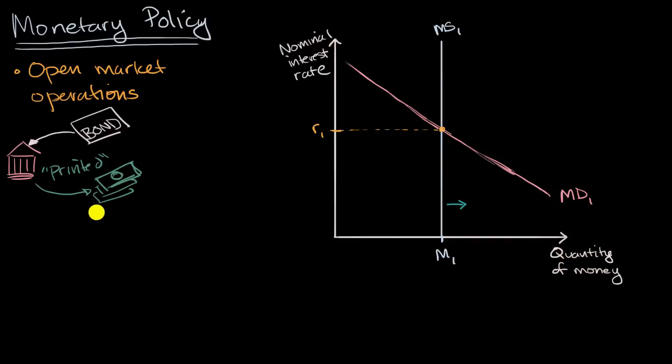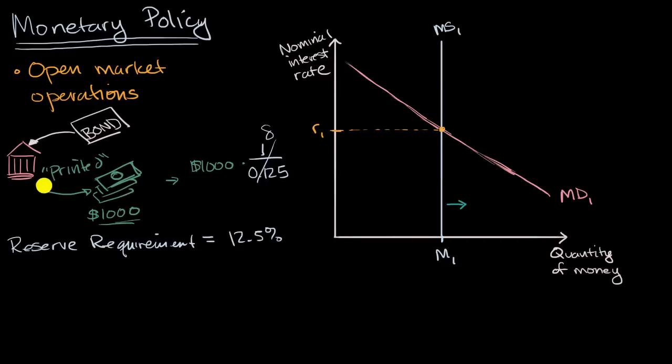Let's say that the central bank bought this from me for $1,000, and let's say that our current reserve requirement is equal to 12.5%. Well, the effect on the money supply won't just be $1,000. Instead, we would move $1,000 times the money multiplier. And what's the multiplier going to be? It's going to be one over 12.5%, or 0.125. One over 0.125—this is eight. So the money multiplier here is eight. So the effect of buying that $1,000 bond with new printed currency would actually be to increase the money supply by $8,000.